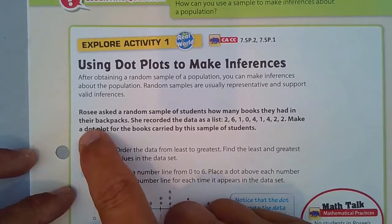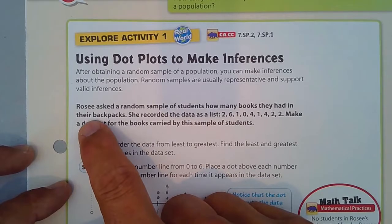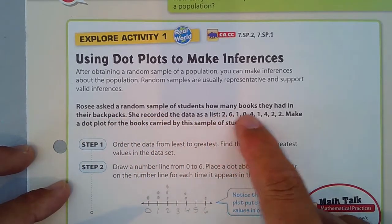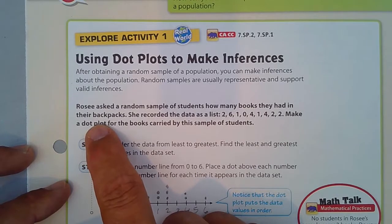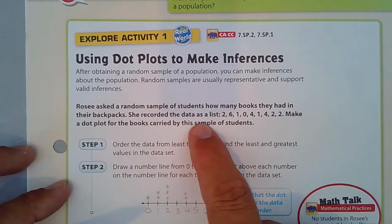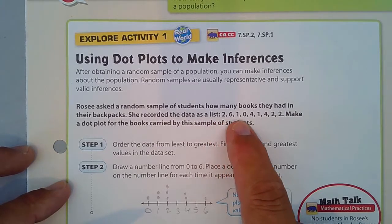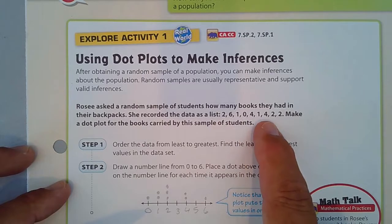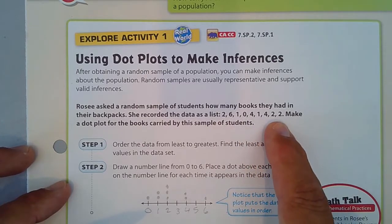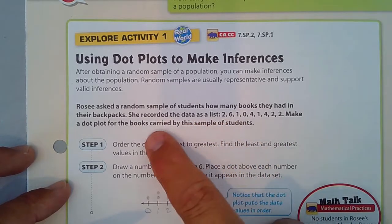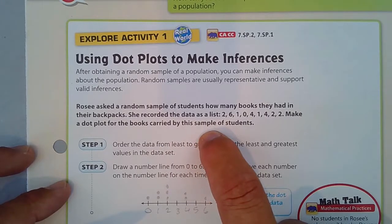In our situation here, Rosie asked a random sample of students how many books they had in their backpacks. She recorded the data as a list: two books, another student had six, and zero, one, zero, four, one, four, two, and someone had two books in their bag. Make a dot plot for the books carried by this sample of students.